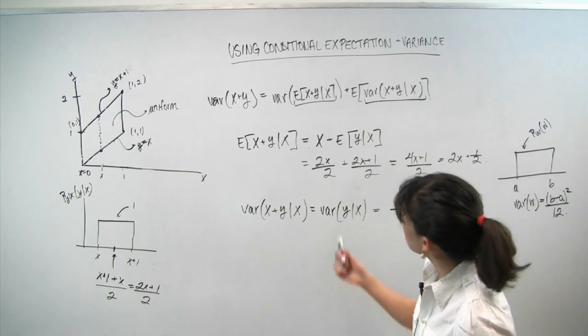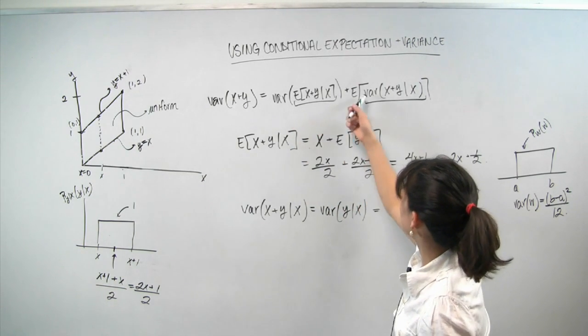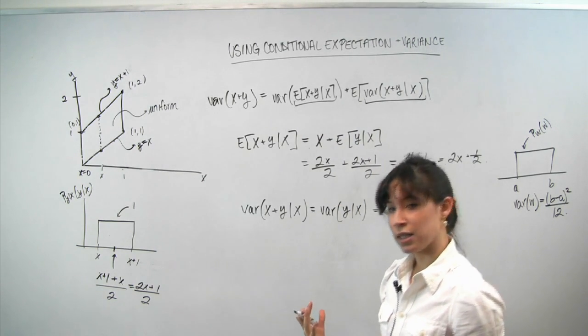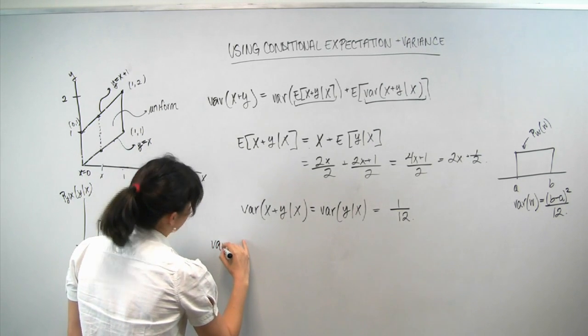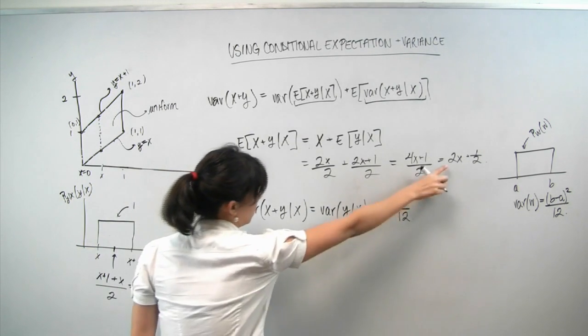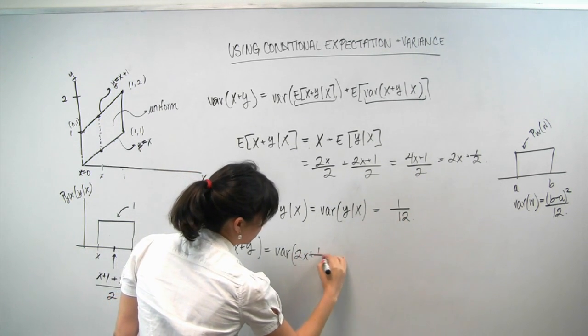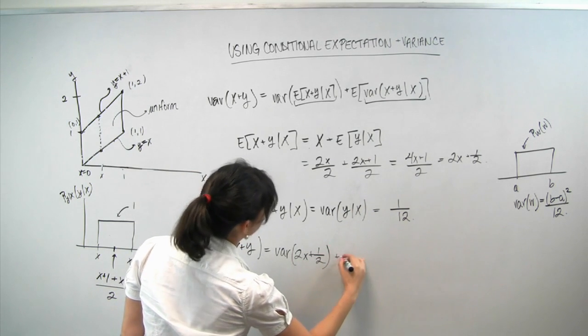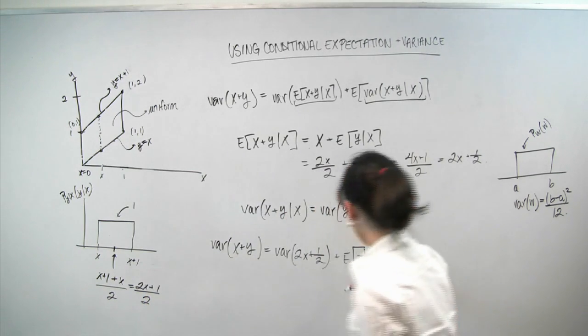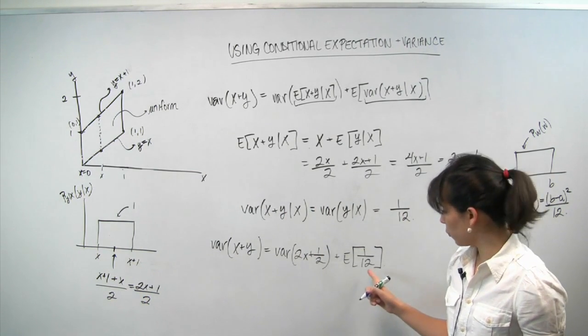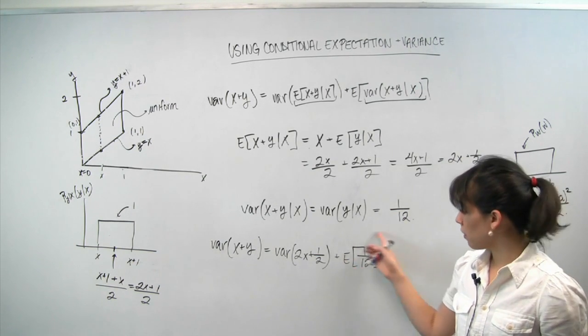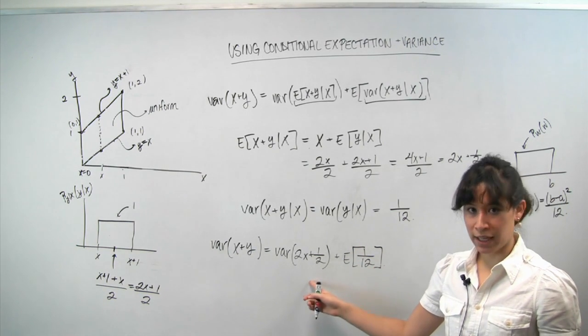So we're making good progress because we have this inner quantity and this inner quantity. So now all we need to do is take the outer variance and the outer expectation. So writing this all down, we get variance of x plus y is equal to variance of this guy, 2x plus 1 half, plus the expectation of 1 twelfth. So this term is quite simple. We know that the expectation of a constant or of a scalar is simply that scalar. So this evaluates to 1 twelfth. And this one is not bad either.